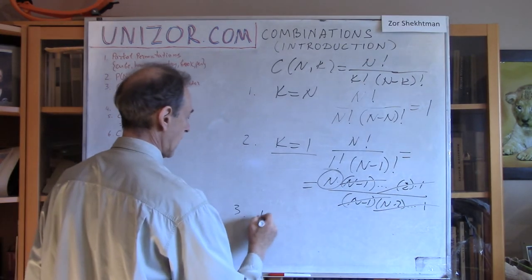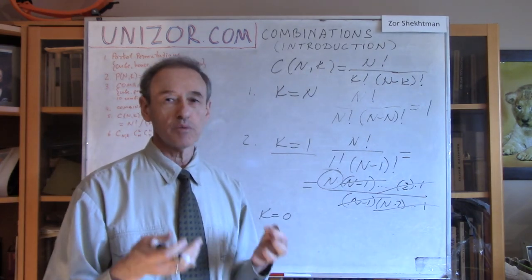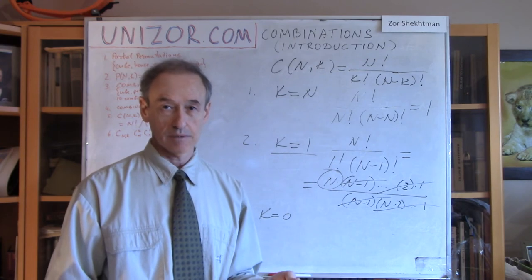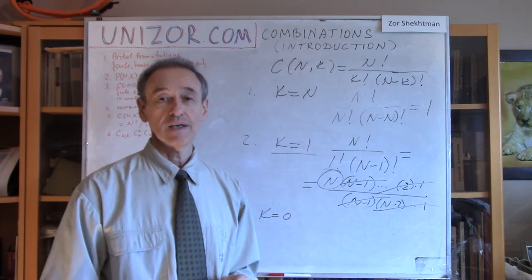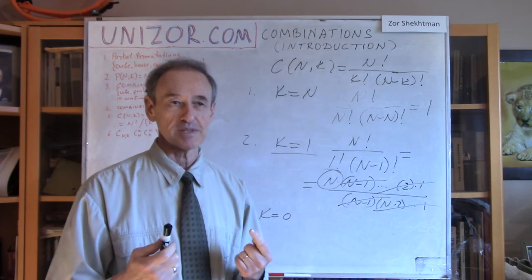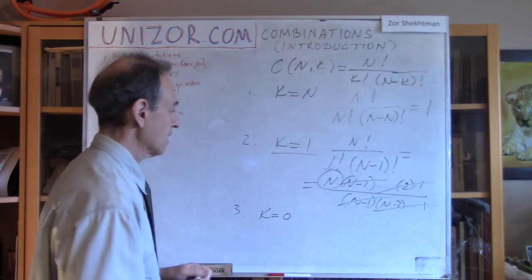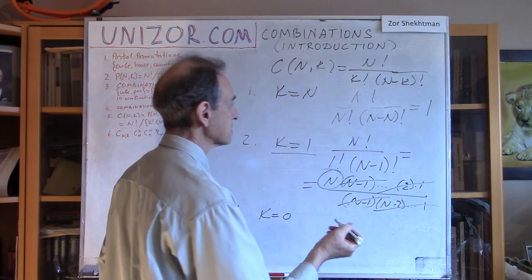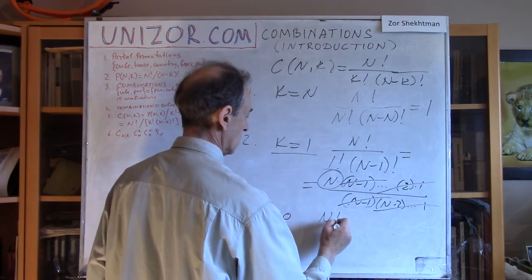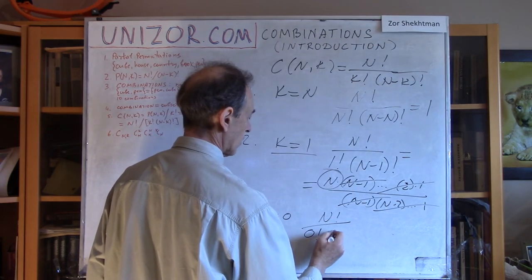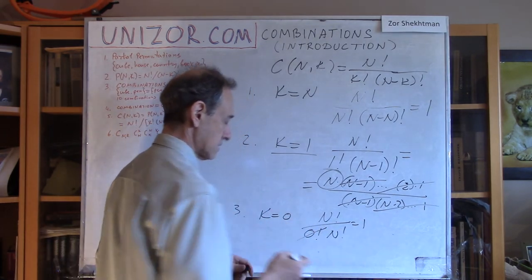The third case: k equals zero. We want an empty subset — a subset which has no elements. How many empty subsets exist? Only one. There is only one empty subset in the universe. So the answer is supposed to be one. Let's check: n factorial divided by zero factorial and n factorial. Zero factorial is one, so the result is one — as it's supposed to be.